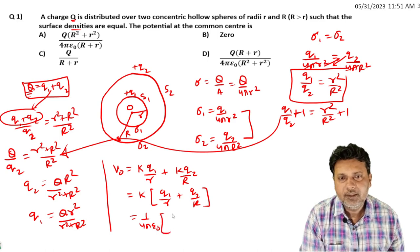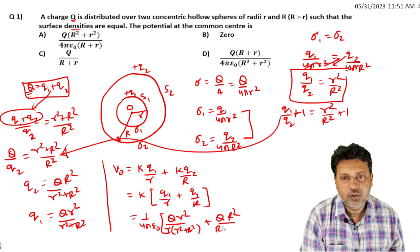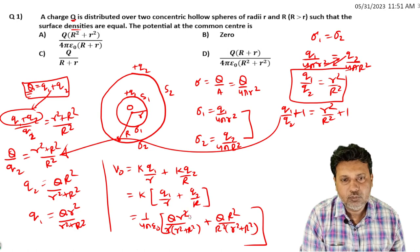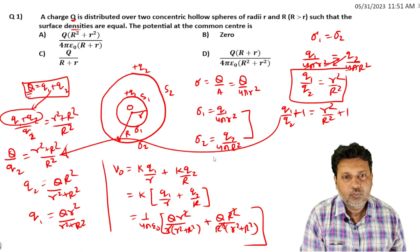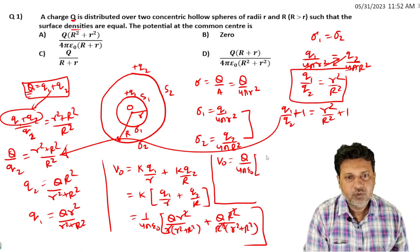Substituting the values of q1 and q2: V = (1/4πε₀) · [Qr²/(r(r² + R²)) + QR²/(R(r² + R²))]. Cancelling r from the first term and R from the second term, then taking Q/(4πε₀) common, we get V = Q(r + R) / [4πε₀(r² + R²)].